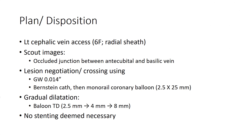Plan and disposition: Left cephalic vein access using a 6 French radial sheath. Scout images revealed an occluded junction between the antecubital and basilic veins. Lesion negotiation and crossing were carried out using a 0.014-inch guide wire and a Bernstein catheter, then a monorail coronary balloon. Gradual dilatation was performed using 2.5, 4, and then 8 mm balloons. No stenting was deemed necessary.